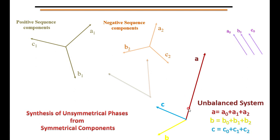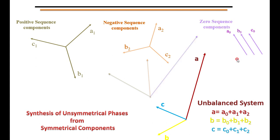The third set extracted from the unbalanced phasor is the zero sequence component. These zero sequence components — A0, B0, and C0 — have equal magnitude, but the phase displacement between A0, B0, and C0 is zero. These are called the zero sequence components.